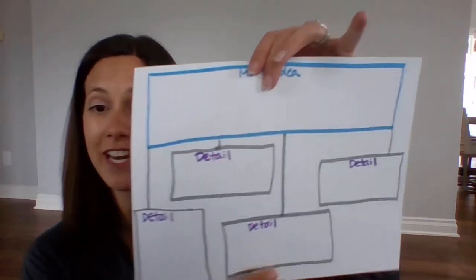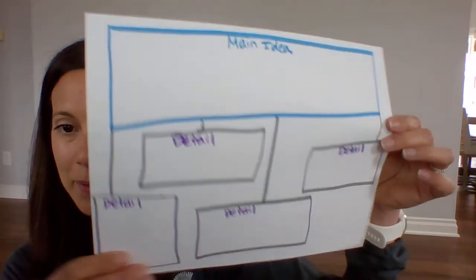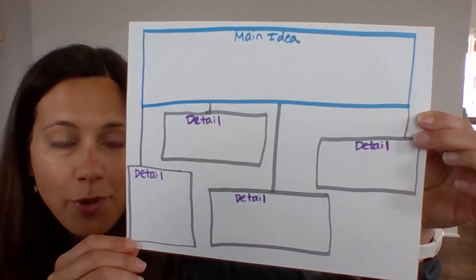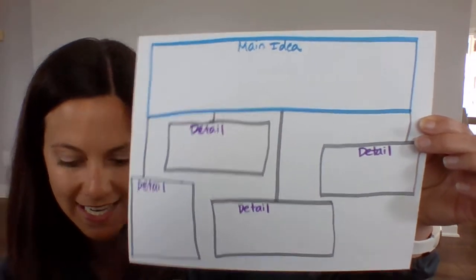Now either create a graphic organizer like this on a blank paper, or just type up what the main idea is and four details. That is your activity for today. Please be sure to share your work with your teacher in the manner that they have asked for on your learning menu for this week. Thank you for being such great learners today! Bye!